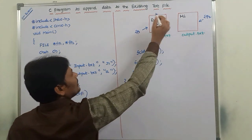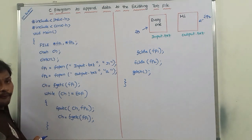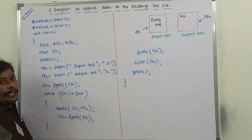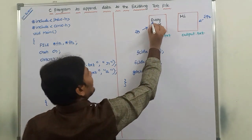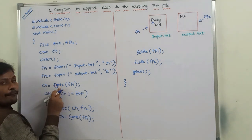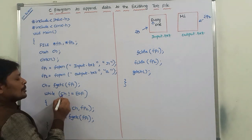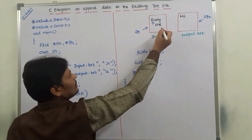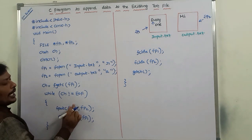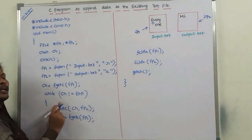We read the data within input.txt file character by character using fgetc. fp1 is pointing to letter 'e' in input.txt. Letter 'e' is read using fgetc and assigned to variable ch, so ch contains 'e'. We check: e != EOF — yes, 'e' is not the end of the file, so the condition is true. The control goes to the body of the loop. fputc writes letter 'e' stored in ch into output.txt pointed by fp2.